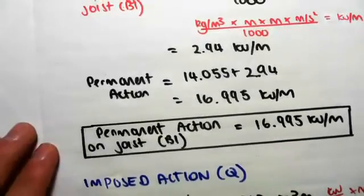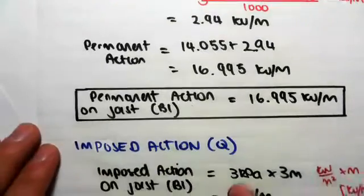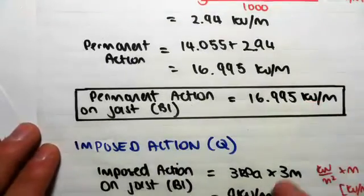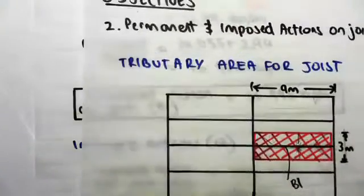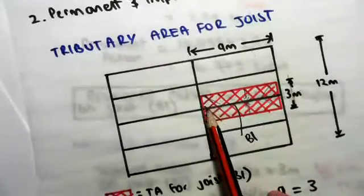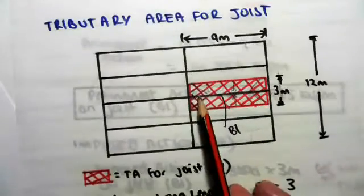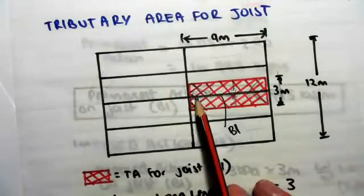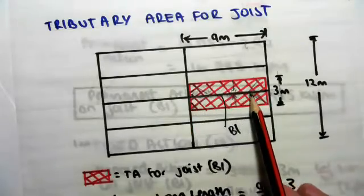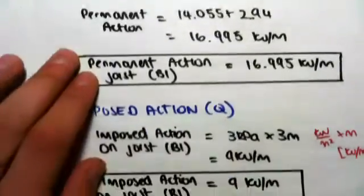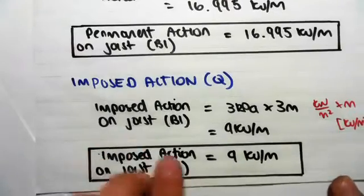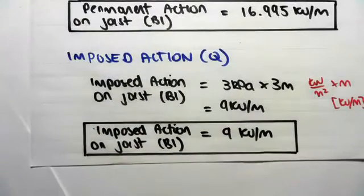Both the permanent action and the imposed action are UDLs in kN/m. We've effectively found the UDL along the joist: 16.995 kN/m permanent (from slab and self-weight) and 9 kN/m imposed (from the slab above). Hope that helps and we'll see you in the next video.